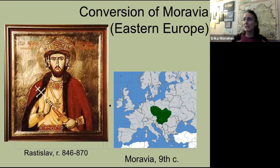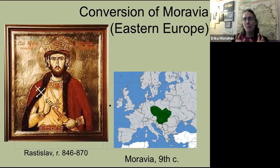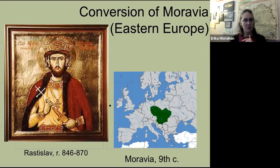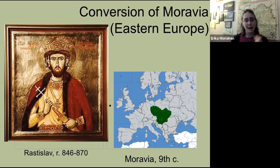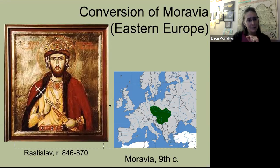Rastislav, a ruler in Moravia or slightly west, saw that to his west were descendants of Charlemagne pushing Latin Christianity — and if he converted that way, he'd be under their thumb, subordinate, receiving their bishops and church books. But he thought Christianity was effective for unifying people, so why not adopt it while doing an end-run around those rivals? He sent messengers to Constantinople saying he wanted to take up Christianity, understanding he could reap the benefits without being under the thumb of Latin Christian rivals to his west.